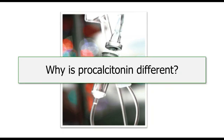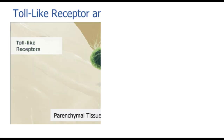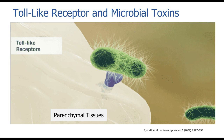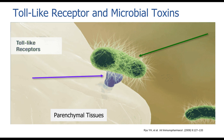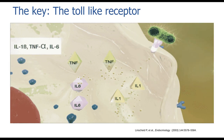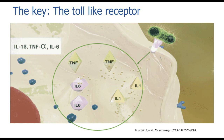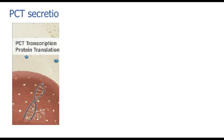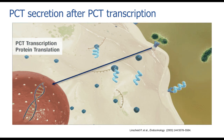We've studied over 1,800 biomarkers for infection. What makes procalcitonin different? All parenchymal tissues have what we call a toll-like receptor — we have at least 12 that have been identified. When bacteria activates the toll-like receptor, two things happen: there is immediate release of interleukin-1, interleukin-6, and tumor necrosis factor — stored in the cell and released immediately. But crucially, a signal is also sent to the cell to make procalcitonin. Procalcitonin is not stored; it has to be made, and that process takes three to six hours.